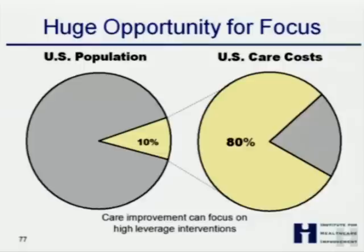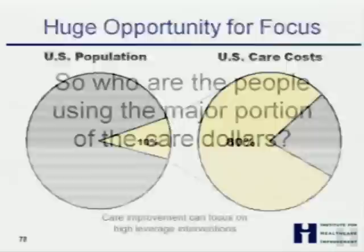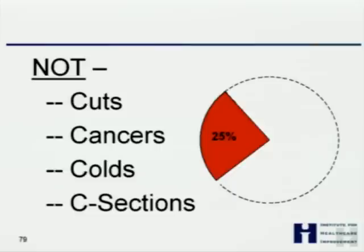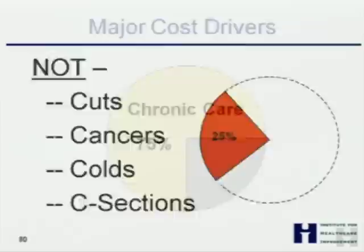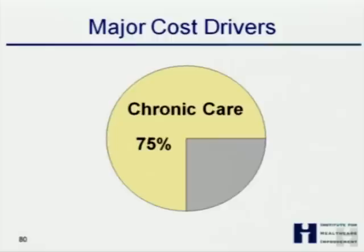There's a huge opportunity for high-leverage interventions, and to do that we need to understand who those people are. It's not cuts, cancers, colds, and C-sections. Cancers are an important part of healthcare delivery, but they're not the most expensive part. The most expensive part is chronic conditions. Chronic conditions drive 75% of the cost of care. And patients with comorbidities — more than one condition — drive 80% of the cost of care.